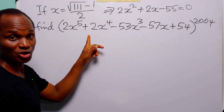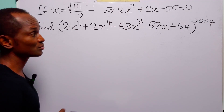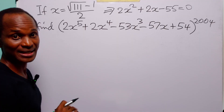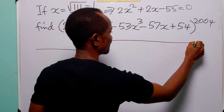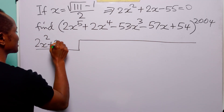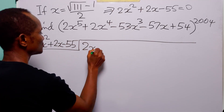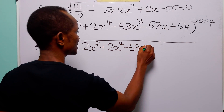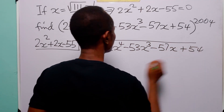To find the value of the function when x = (√111 − 1) / 2, we divide the function by 2x² + 2x − 55 and find the remainder using the long division method. We have divisor 2x² + 2x − 55 and dividend 2x⁵ + 2x⁴ − 53x³ − 57x + 54.